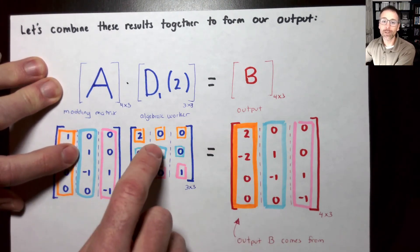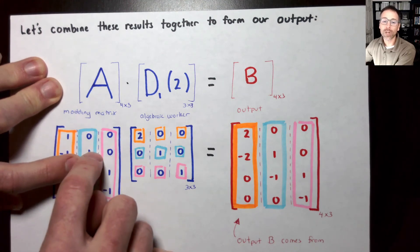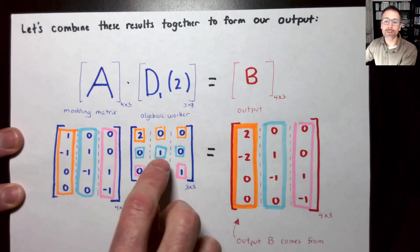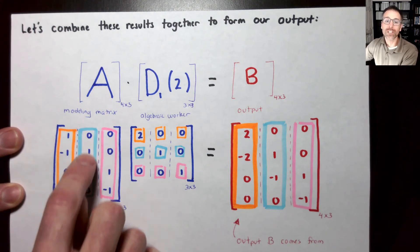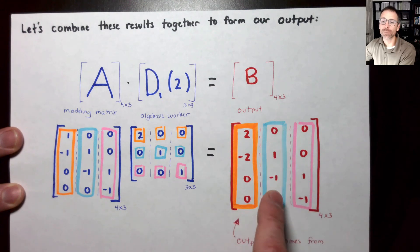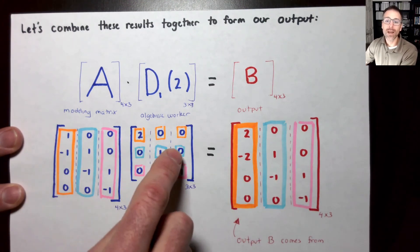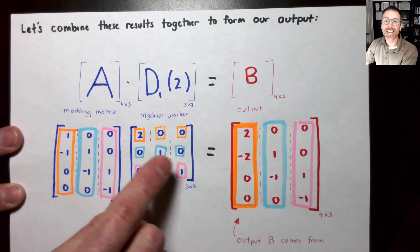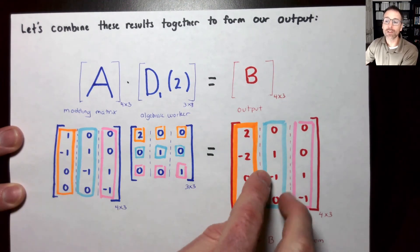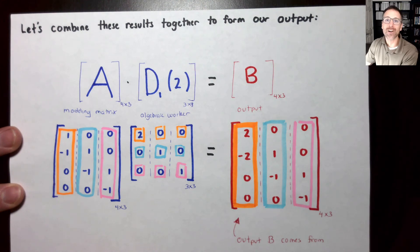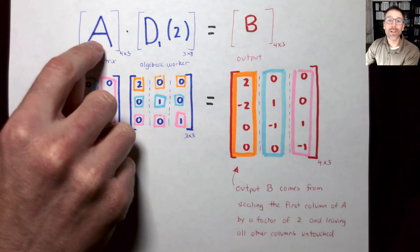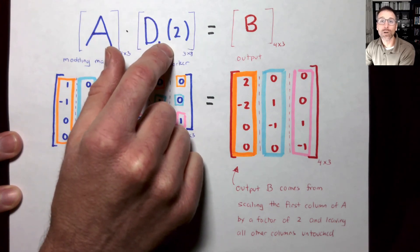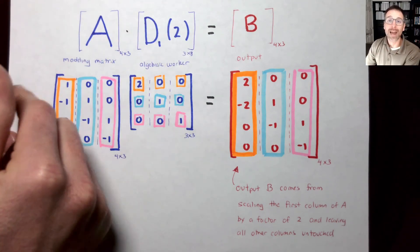The second column of the output is 0 times column 1, 1 times column 2, 0 times column 3 — I like to think of this like a telescope: I'm focusing in on column 2 and leaving columns 1 and 3 out of it. I take one copy of column 2, so column 2 of the input equals column 2 of the output. Similarly for column 3: we pick off column 3 and get that output. This product has exactly the form we want — double column 1, and leave the other two columns identical. When we want to manipulate columns of a modeling matrix, we multiply on the right by an algebraic worker.